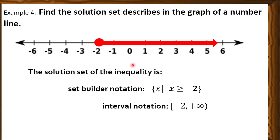Next example. We have a closed circle at negative 2, and the shaded region is going to the positive infinity. For the set builder notation, numbers to the right of negative 2 are greater than or equal to negative 2, so we have the set of all x such that x is greater than or equal to negative 2. For the interval notation, since negative 2 is included, we have a bracket and then negative 2. Then going to the positive infinity, we have a closed parenthesis.